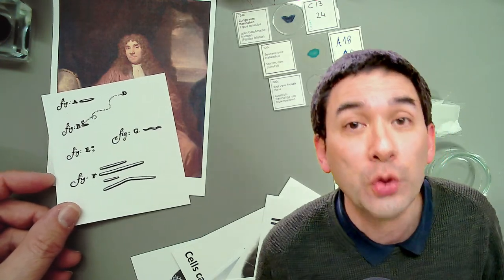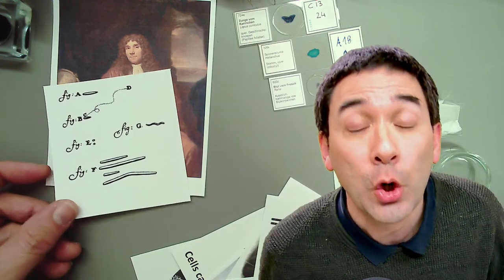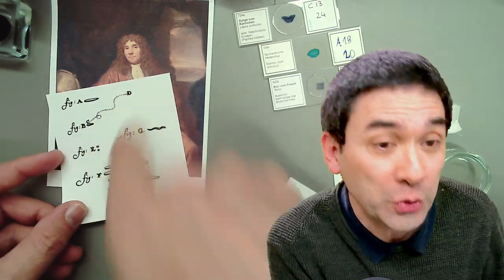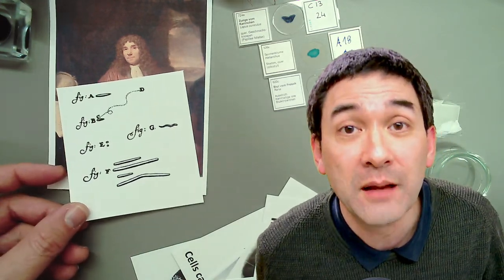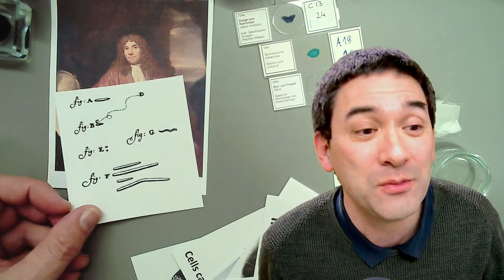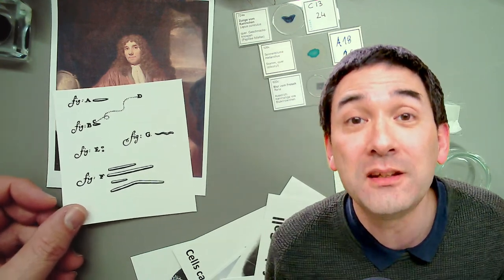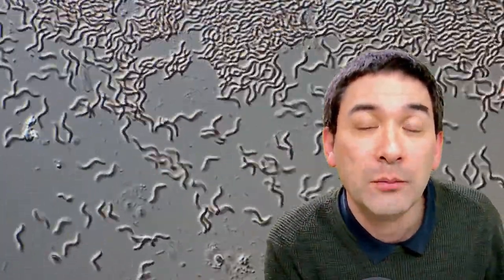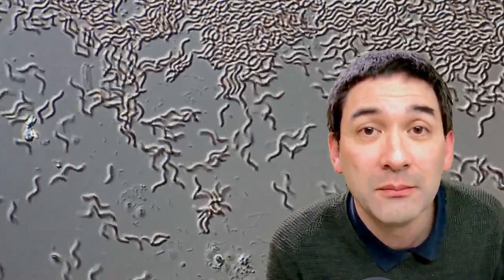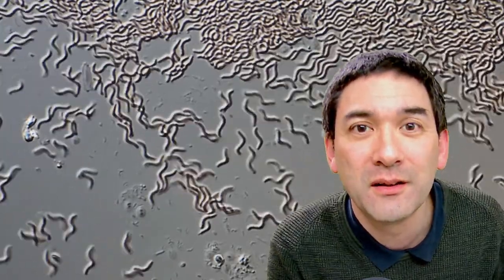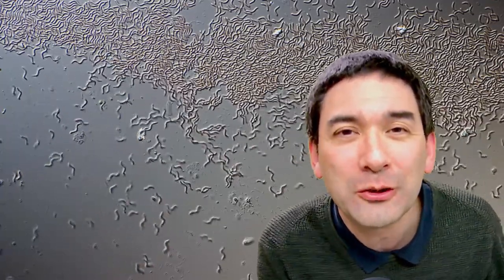Leeuwenhoek didn't know bacteria could cause disease — he simply saw them moving. Photography hadn't been invented, so we only have sketches. I'd like to show you now how spiral-shaped bacteria look under a modern microscope. This is from a pond water sample with decomposing material — those bacteria move like a corkscrew. With modern technology we capture movement that simply cannot be shown in a drawing.